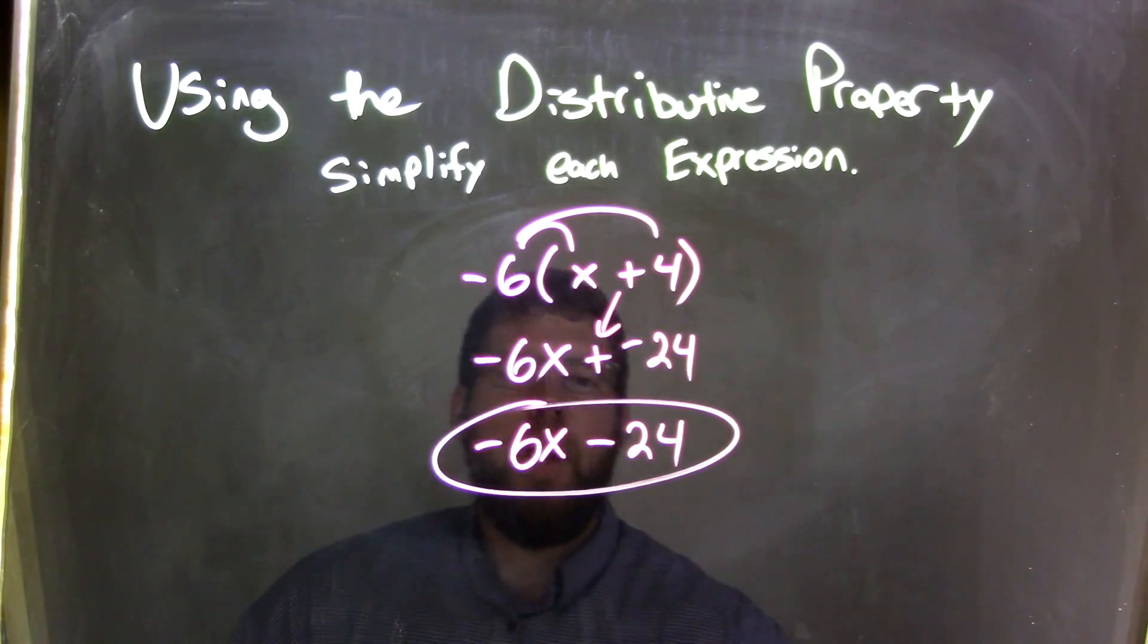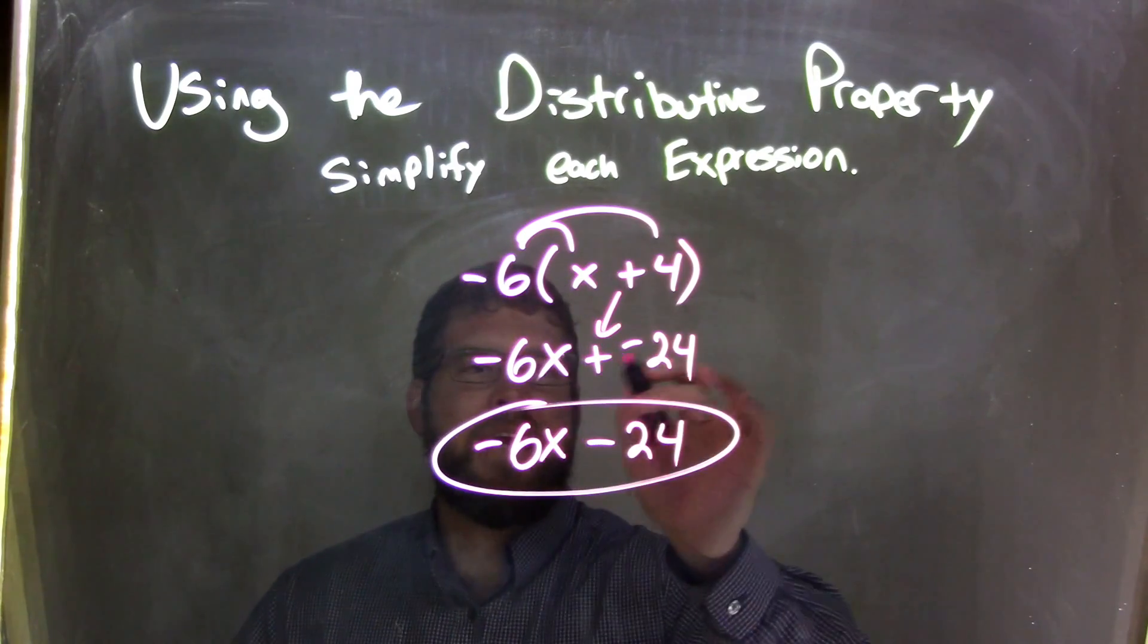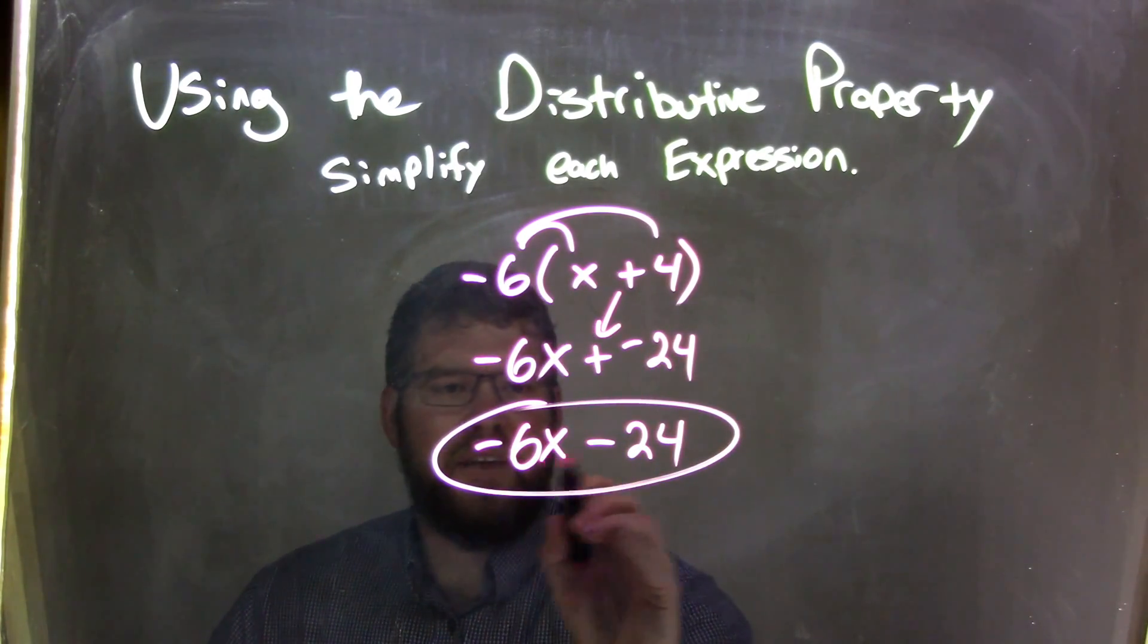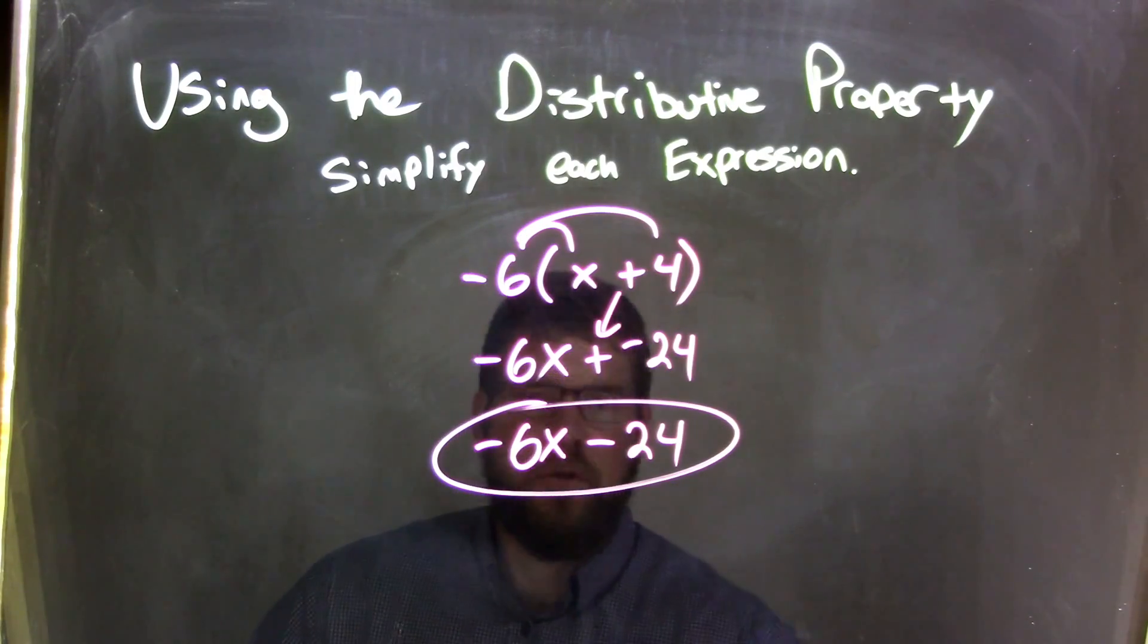We brought down that plus sign, but now we have plus a negative. Adding a negative is the same thing as subtraction. Cleaner to write, so we have negative 6x minus 24 as our final answer.